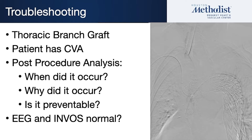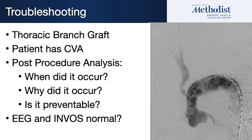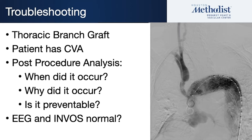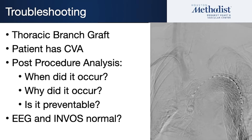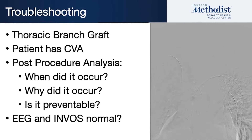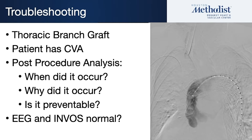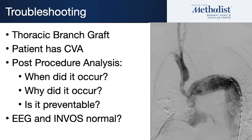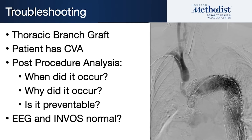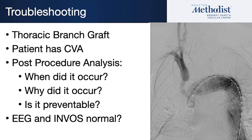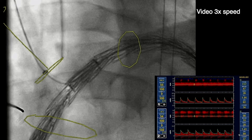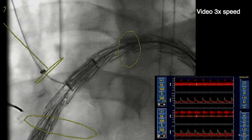In terms of troubleshooting, here's an example. We're going to put in a thoracic branch graft — you see a stent graft in the ascending aorta with a branch on the side. Let's say we do this procedure and the patient wakes up with a stroke. What am I going to do about it? I have no idea when this patient actually had a stroke unless we have ongoing real-time monitoring.